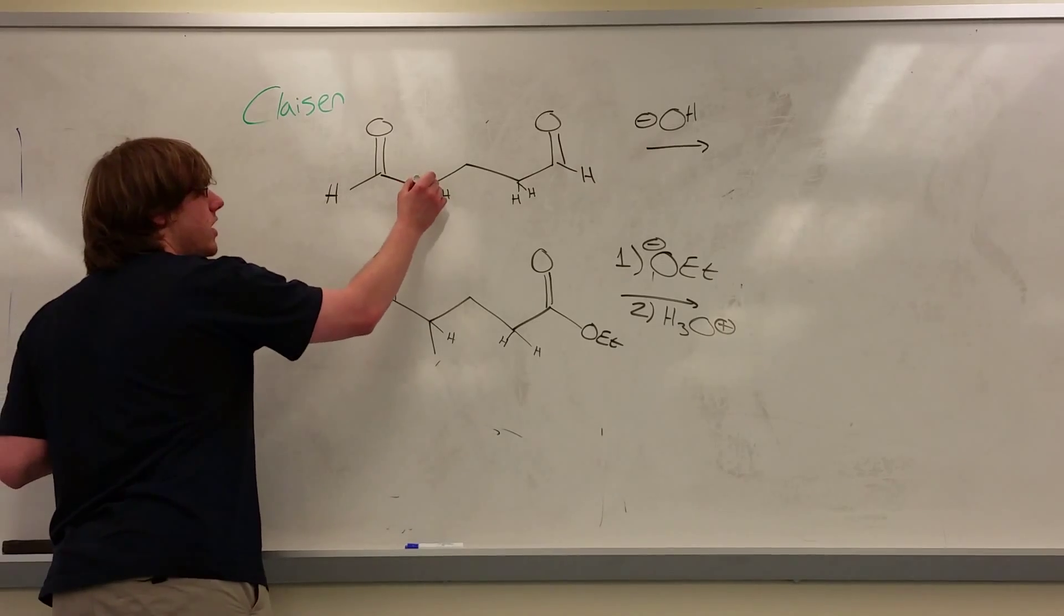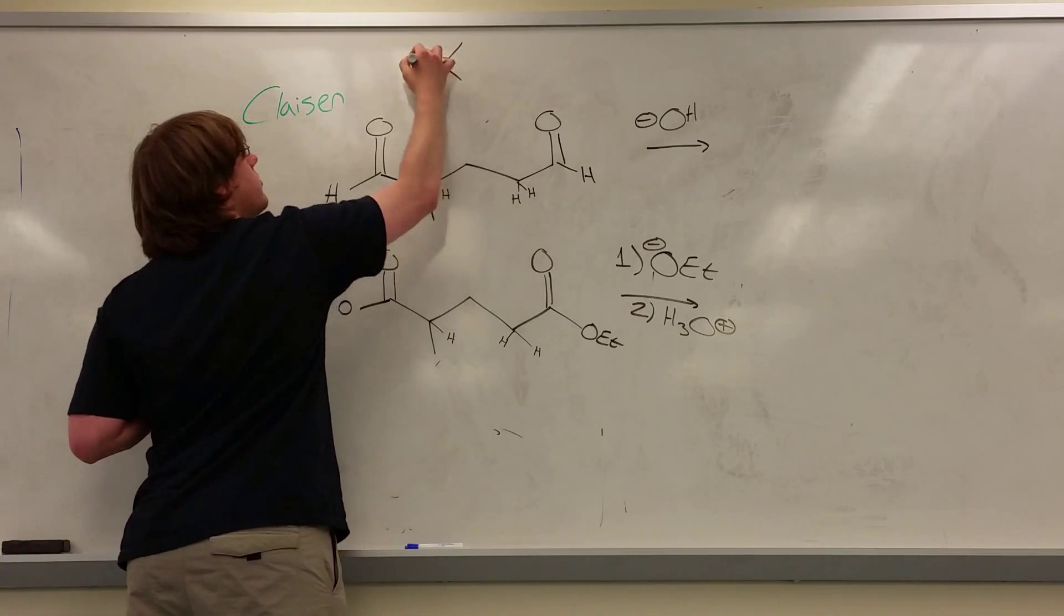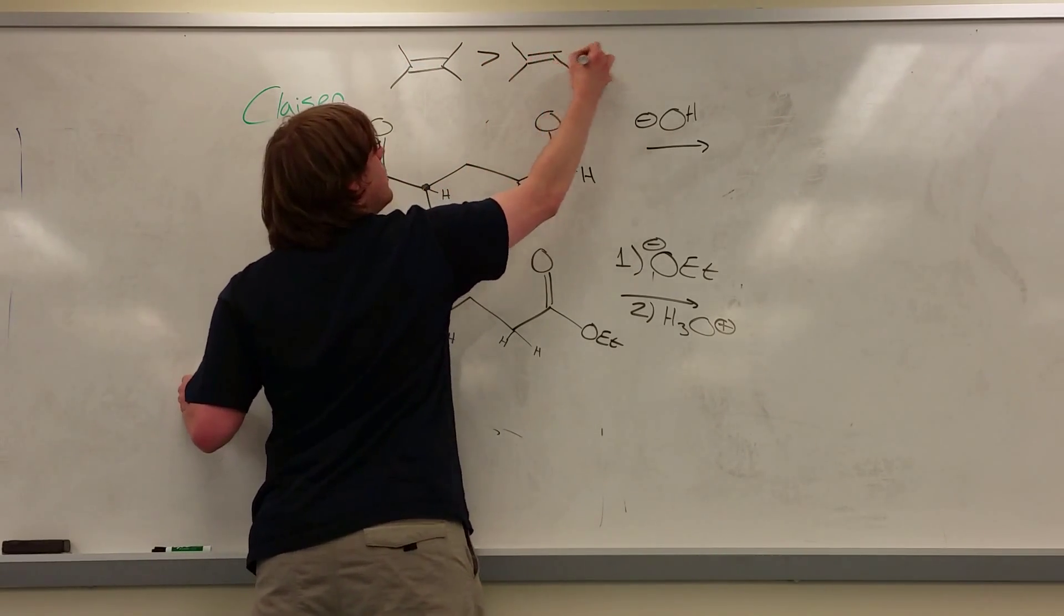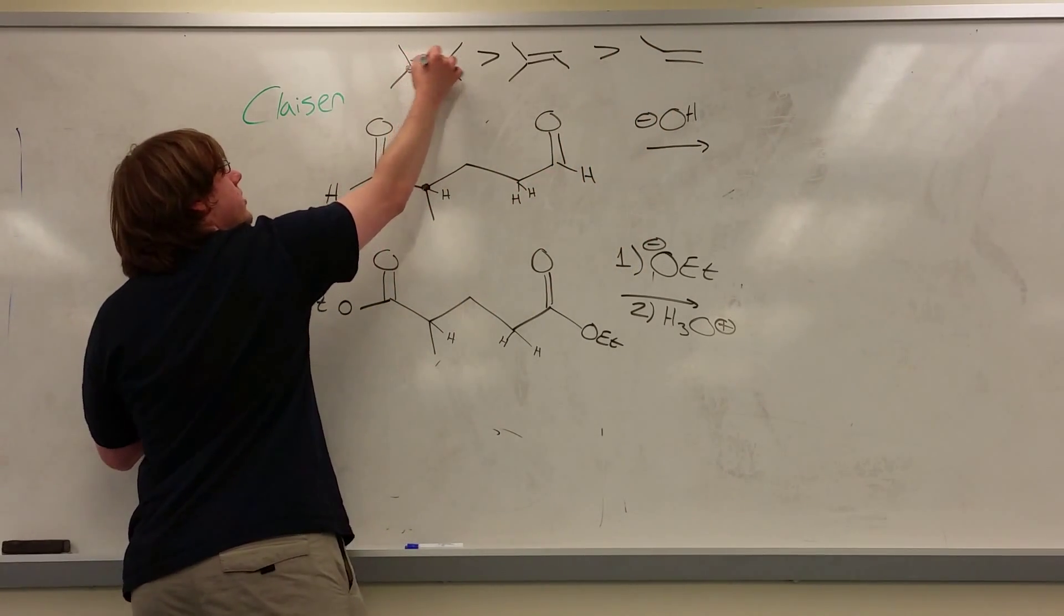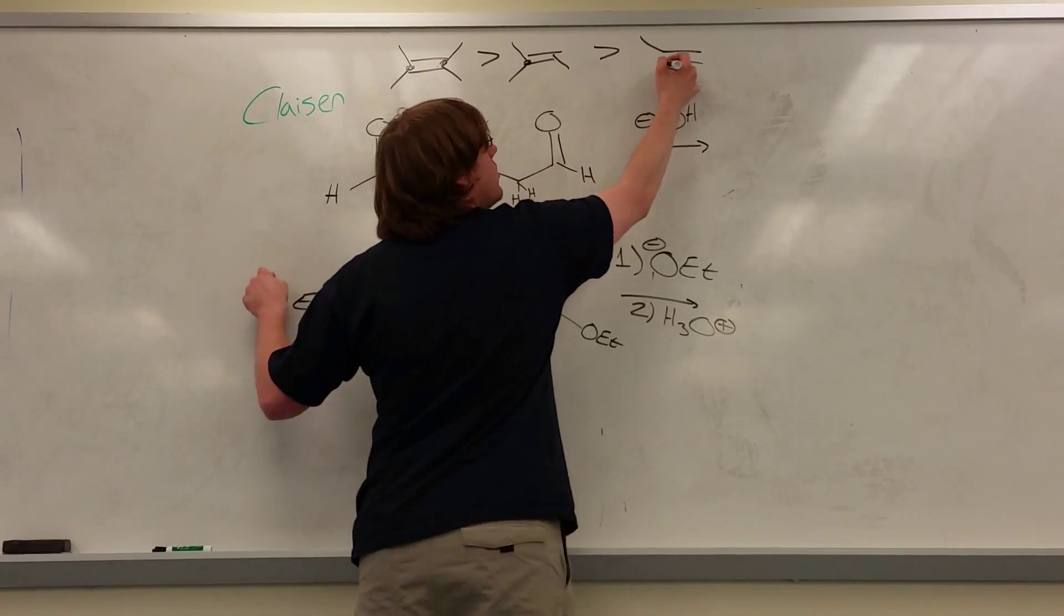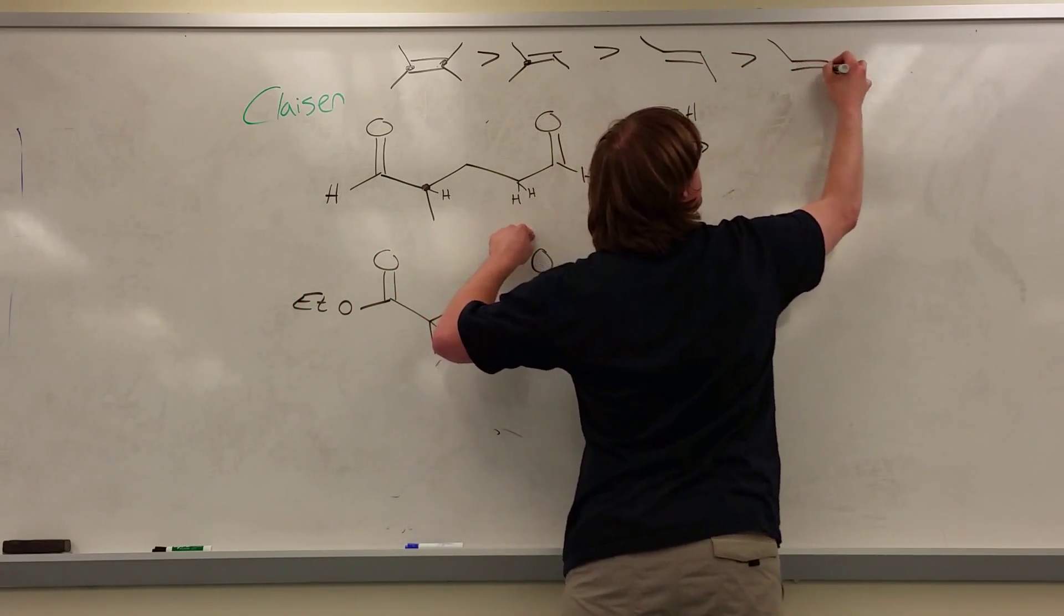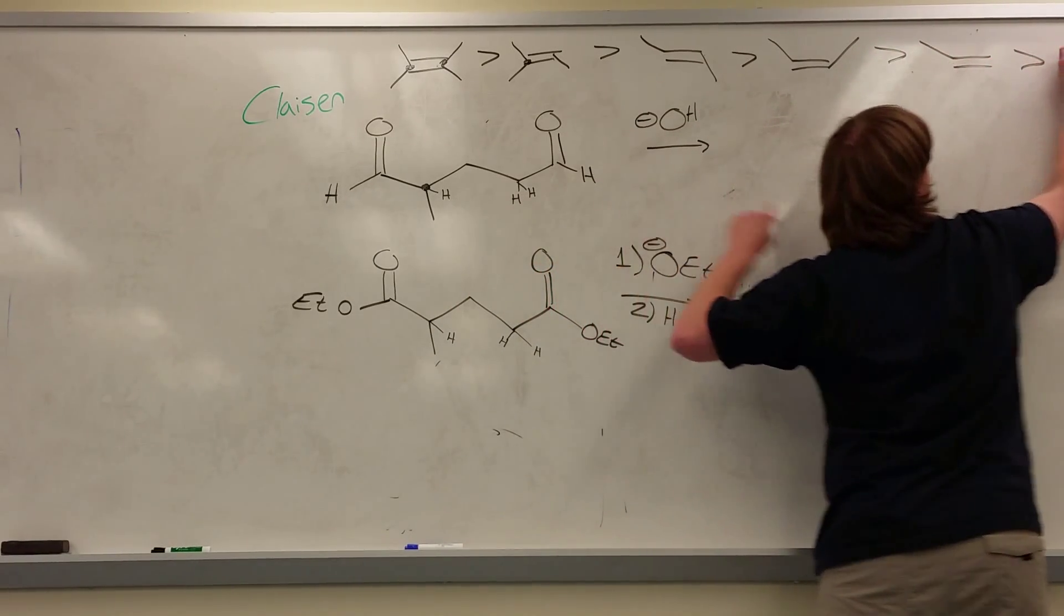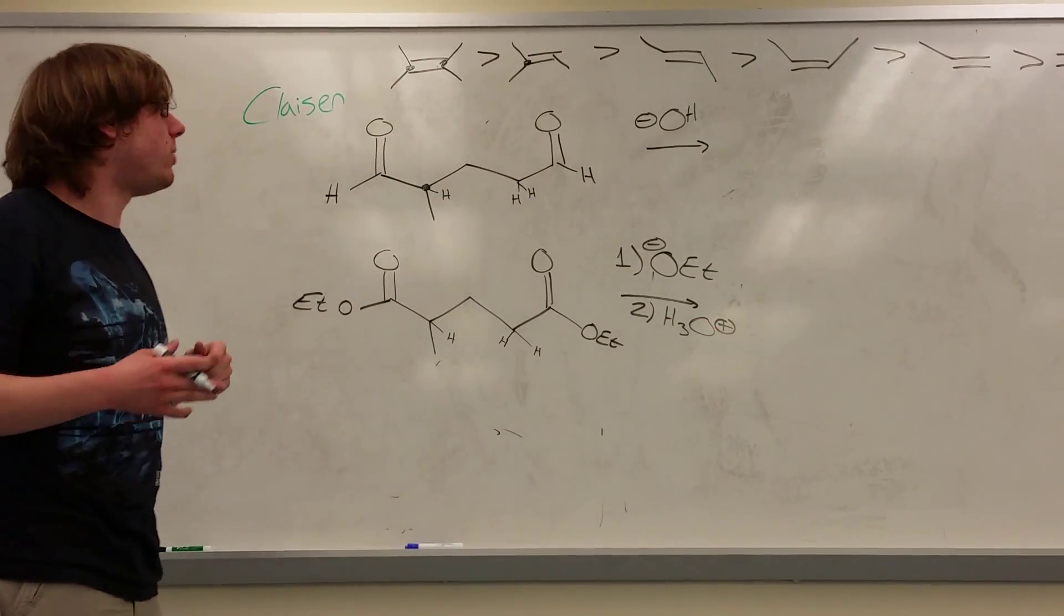So I have a tertiary hydrogen versus a secondary, and we know that the stability of double bonds increases the more substituted they are. So for example, a double bond that has four separate carbons on it versus a double bond that has three separate carbons versus trans versus cis versus a terminal versus a double bond with no carbons attached.